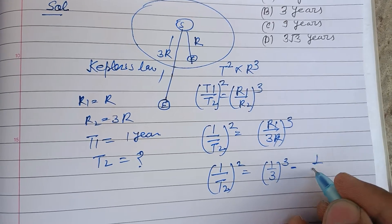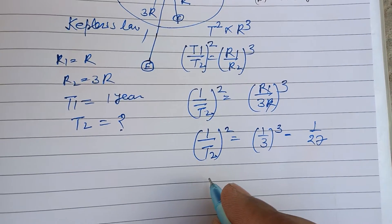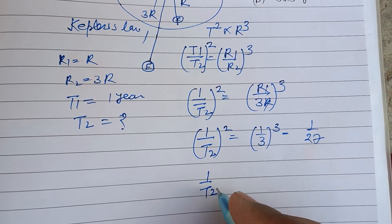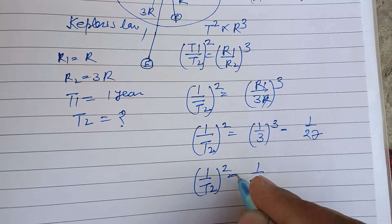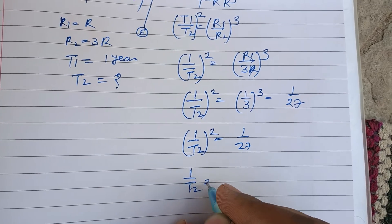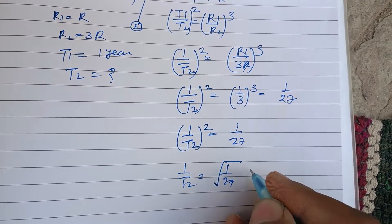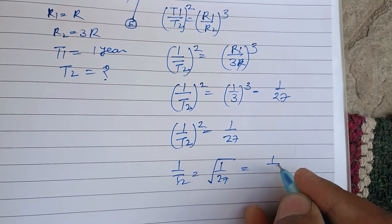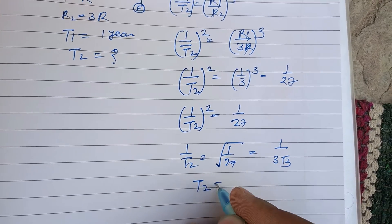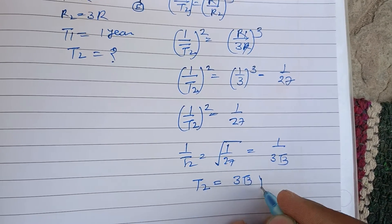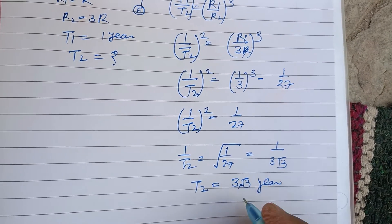So this is (1/T2)² = 1/27, therefore 1/T2 = 1/√27 = 1/(3√3). Reversing, T2 = 3√3. Here is the correct answer to this question.